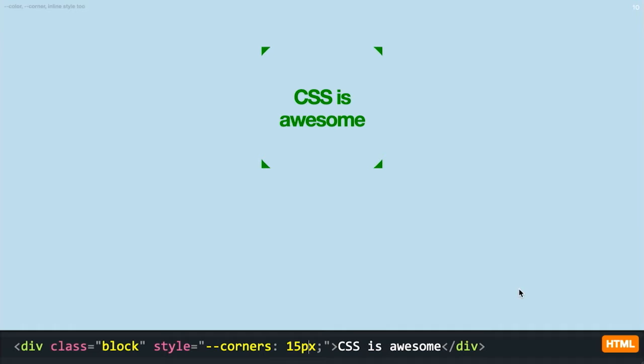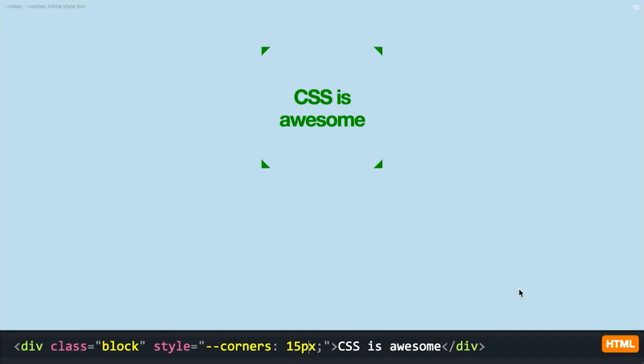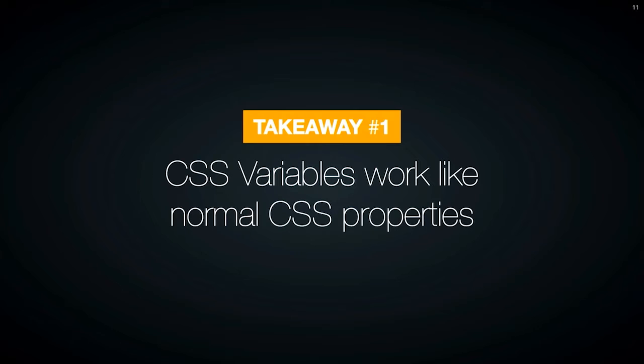If you combine CSS variables with JavaScript, you can do a lot of cool things. The first takeaway is that CSS variables work exactly the same way as normal CSS properties. The dash-dash syntax comes from the idea that variables are kind of prefixed properties with an empty prefix — you know those -webkit- properties? Well, CSS variables are properties with an empty prefix.